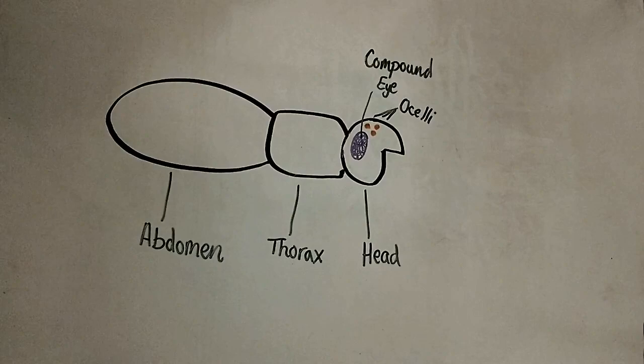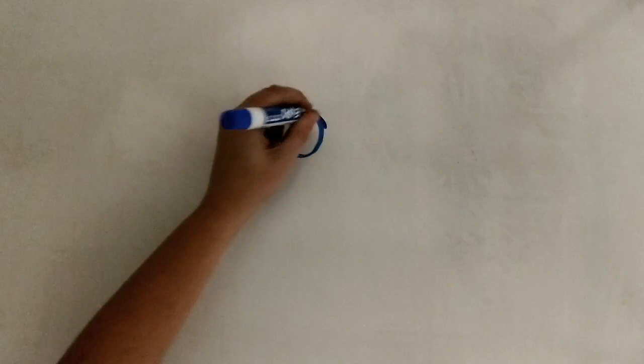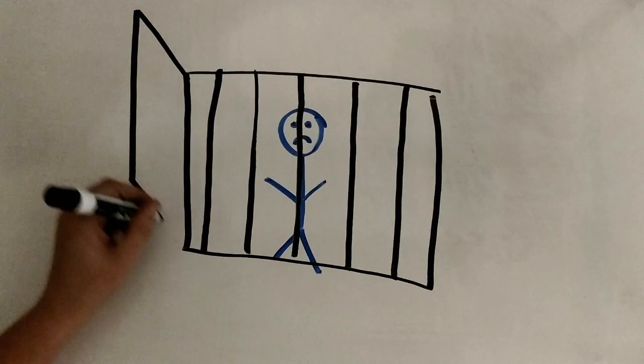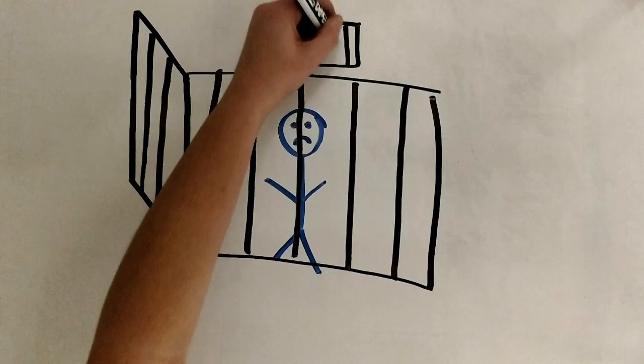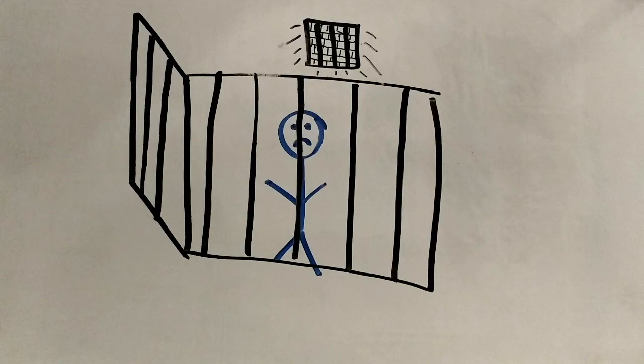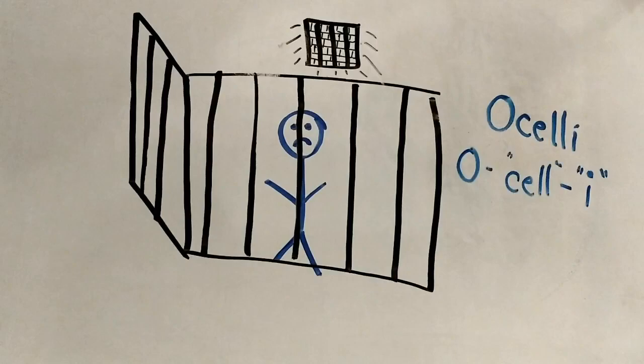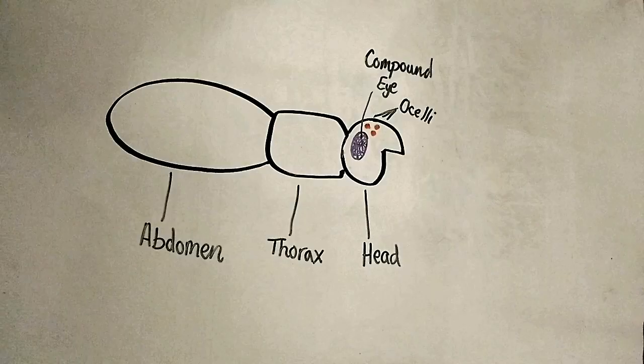Having a hard time remembering ocelli? Think of this story: this person illegally imported butterflies into the United States and is now serving hard time for his crimes. He has a barred window that looks outside at a cement wall, but he can still see the light from the sun and the darkness of night. His cell eye can only see light — this cell window is equivalent to the ocelli.